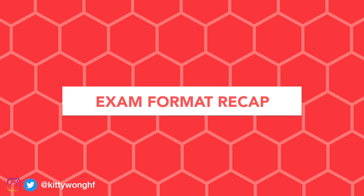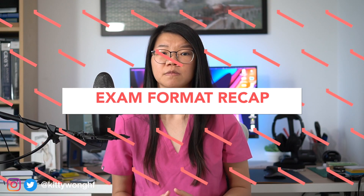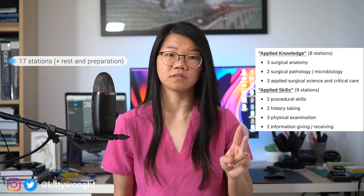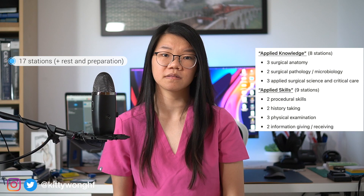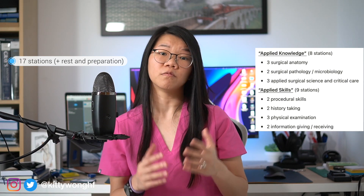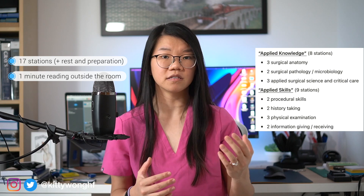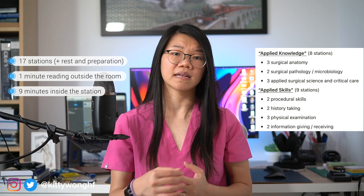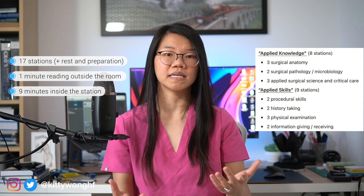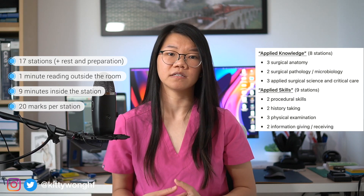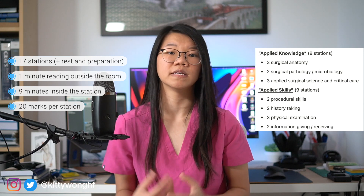Before we start, let's do a whistle-stop recap of what the MRCS Part B exam format is like. There are 17 exam stations in general, with at least two preparation stations and any additional rest stations. The stations are set up in a circuit format, and for each station you have one minute of reading time outside the door with an instruction sheet, and nine minutes to go in and actually answer the questions or perform the exam. Each station is marked out of 20 marks and there's no negative marking, so if you don't know the answer it is always worth a guess.